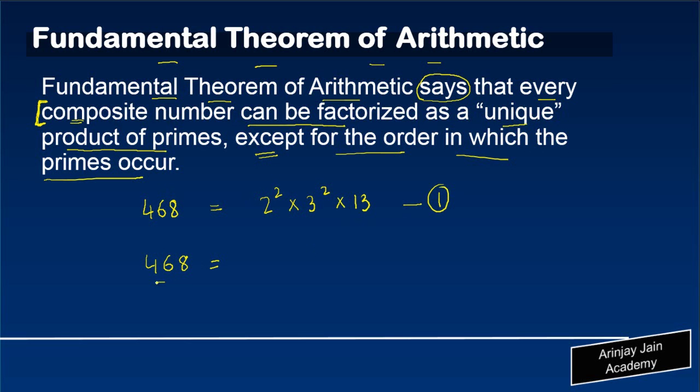Now, let me do the prime factorization of 468 again, in a different manner this time. So this time, I write 468 and divide this by 13. So I get 36.